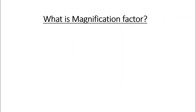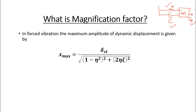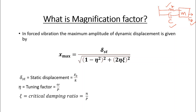Now let us see magnification factor in forced vibration, where we have a spring-mass-damper system with an external force F₀, a damper, and a spring with stiffness k. In forced vibration, the maximum amplitude of dynamic displacement is given by: x_max = δ_st / √((1 − η²)² + (2ηζ)²), where δ_st = F₀/k is static displacement, η = ω/p is the tuning factor, and ζ = n/p is the critical damping ratio.